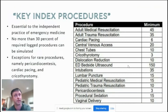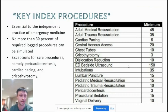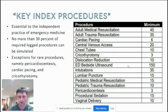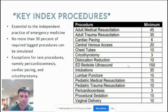The key index procedures for emergency medicine are shown right here. These are the ones the ACGME has deemed essential to the independent practice of emergency medicine. No more than 30 percent of these can be simulated, with the exception of certain rare procedures — usually pericardiocentesis, cardiac pacing, and cricothyroidotomy. Most of these are things we do every day, with the exception of those rare ones, and residents have to obtain them over the course of a three-year program.